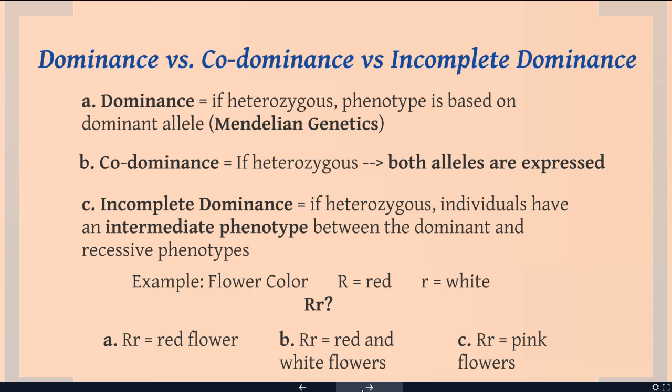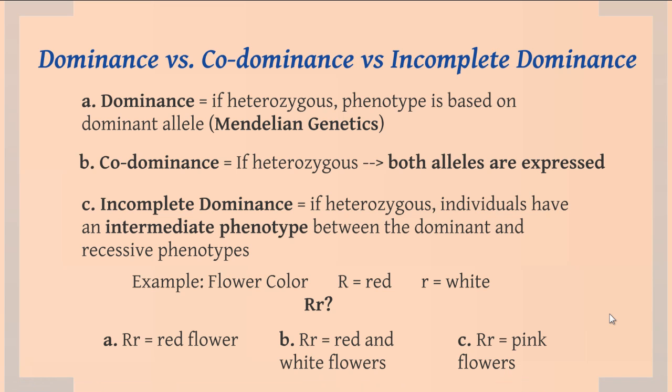With incomplete dominance, the heterozygous individual is going to be pink — a mix of the two colors and an intermediate. One simple way to recognize whether a trait in a population has regular dominant recessive Mendelian genetics or some other kind of interaction: imagine looking at a field of a thousand flowers. If you only see two phenotypes, that's a hint that you've got Mendelian genetics. If you see three — red, white, and red-and-white flowers, or red, pink, and white flowers — that starts to tell you that some other kind of interaction is happening.